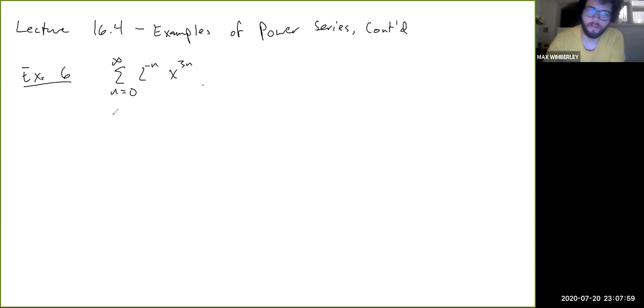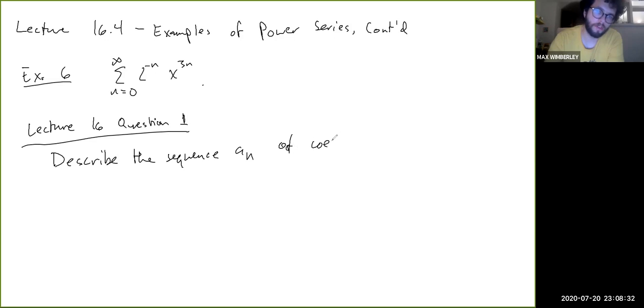So before we even start talking about this, and I know this is in the book, so I mean if you were looking at the book, then that's fine. But I'm going to actually make this into kind of a lecture question. So this is Lecture 16, Question 1. Describe the sequence a_n of coefficients for this series.